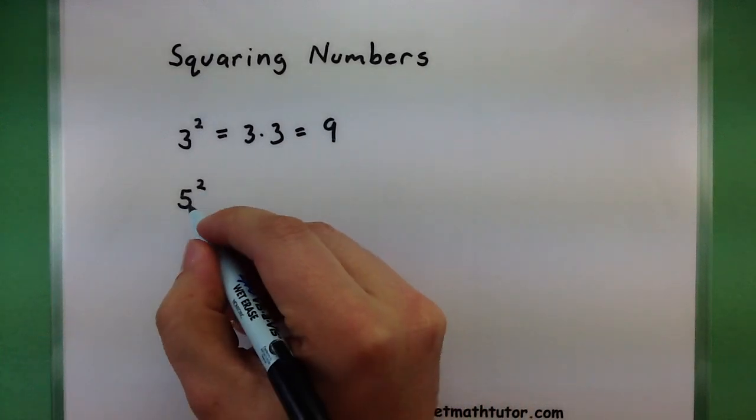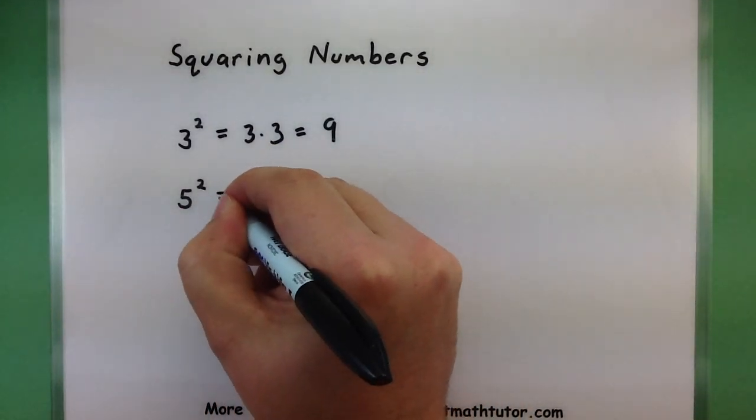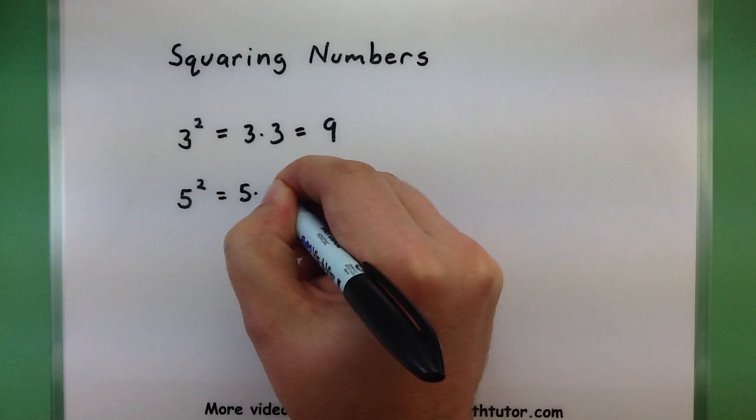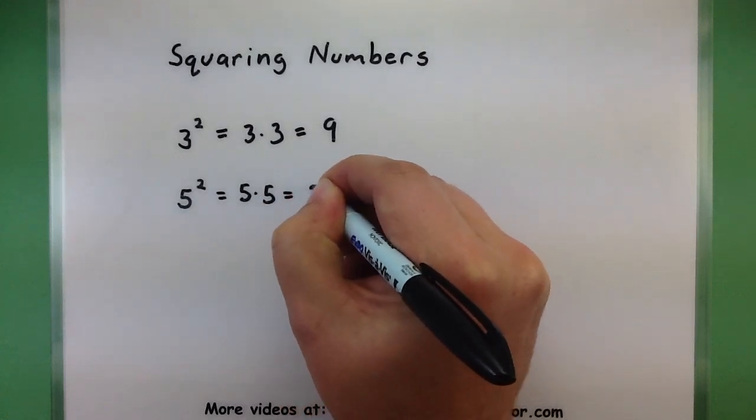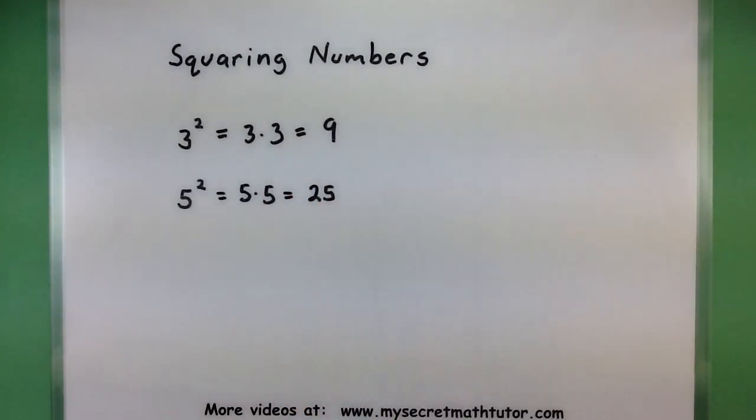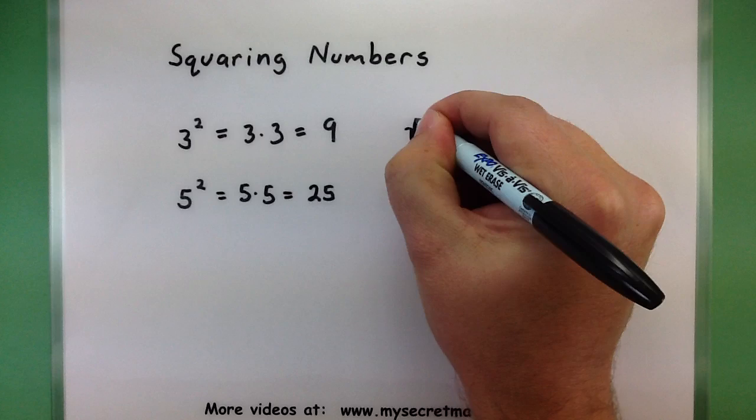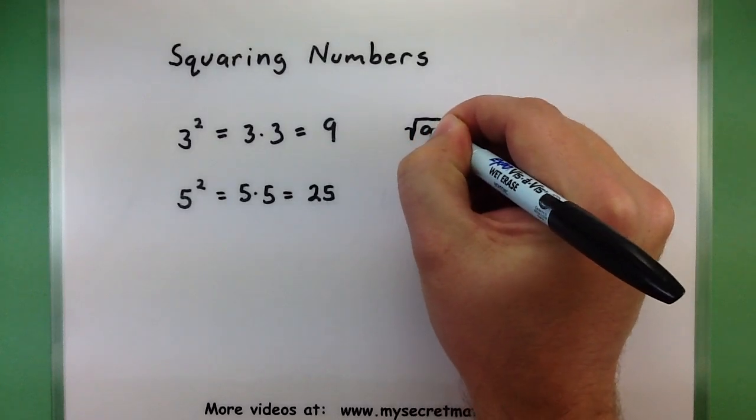And again let's try this with another number. So 5 squared is the same as 5 times 5, which is 25. Now if you can understand that process, square roots are going to be great. The reason is, with square roots we're essentially working in the other direction.